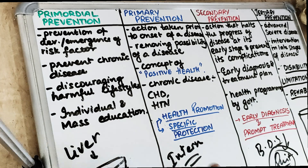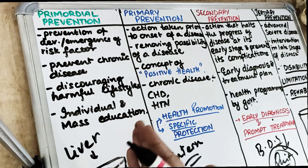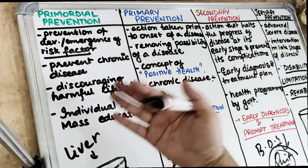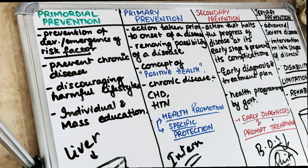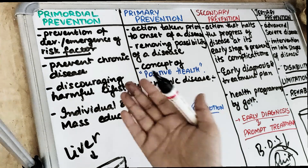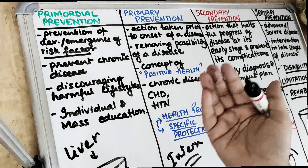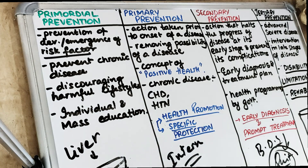Talking about the primordial level of prevention: this is a prevention in which we are stopping and preventing the emergence of risk factors — we are not letting the risk factor develop. For example, if we compare it with coronavirus, maintaining good hygiene stops the risk factor. Quarantine is a kind of primary prevention where we are not letting people go outside so that the disease won't develop.